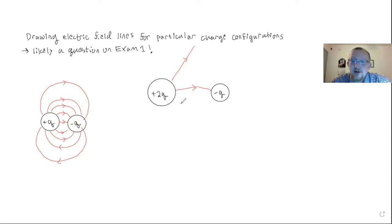So once again, there's infinitely many ways to draw this. Any two lines that leave plus two Q, one of them must terminate at minus Q. And so these are all valid drawings that we're doing here have two going in to negative Q, two going out from positive two Q. So the ratio is maintained.